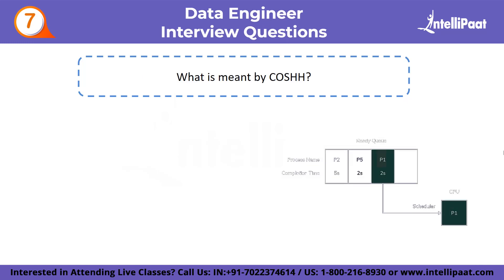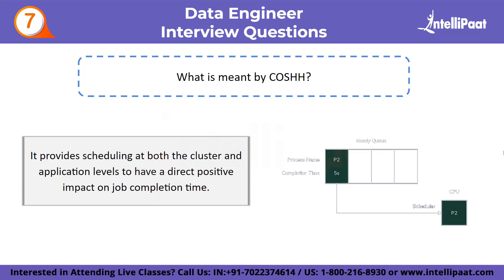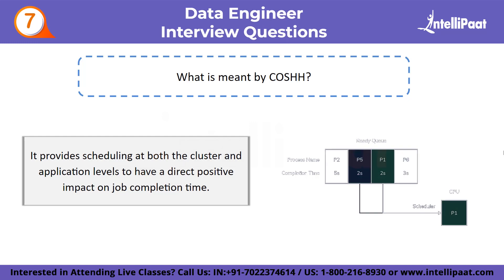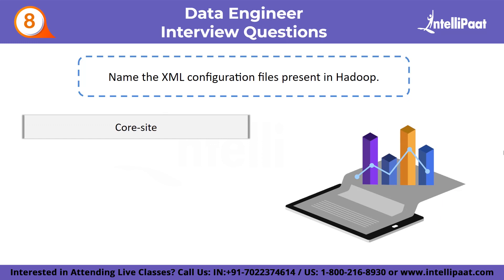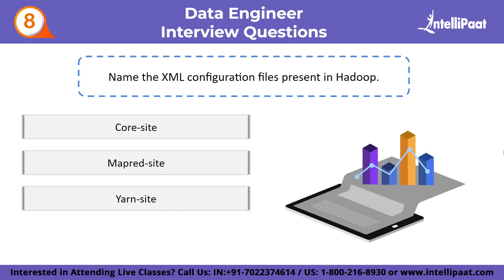Seventh question: what is meant by CAUSH? The acronym CAUSH stands for Classification and Optimization Based Scheduling for Heterogeneous Hadoop Systems. It provides scheduling at both the cluster and application levels to have a direct positive impact on job completion time. Next question: name the XML configuration files present in Hadoop. The XML configuration files available in Hadoop are Core-Site, MapRed-Site, Yarn-Site, and HDFS-Site.